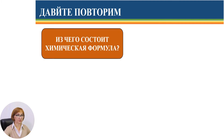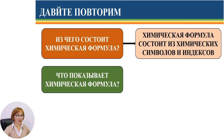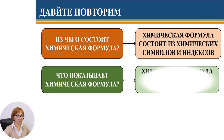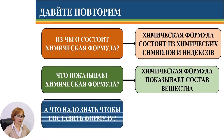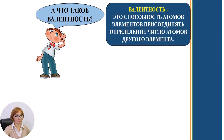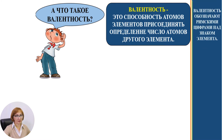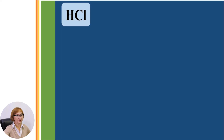Из чего состоит химическая формула? Химическая формула состоит из химических символов и индексов. А что показывает химическая формула? Химическая формула показывает состав вещества. А что надо знать, чтобы составить формулу? Надо знать валентность элементов. Валентность – это способность атомов-элементов присоединять определенное число атомов другого элемента. Валентность обозначается римскими цифрами над знаком химического элемента. Валентность может быть постоянная и переменная.